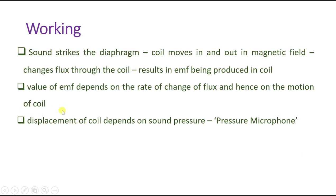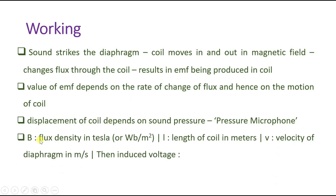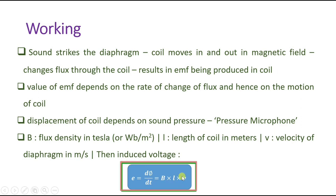The motion of the coil generates an electrical signal having the same proportion of amplitude, frequency, and phase as the sound. Here, the magnetic field is B, the length of the coil is L, and the velocity of the diaphragm is V. The EMF generated is the rate of change of flux with respect to time, which equals B × L × V. That much EMF is generated because of the sound pressure applied on the diaphragm.